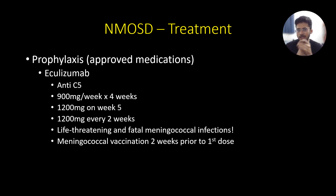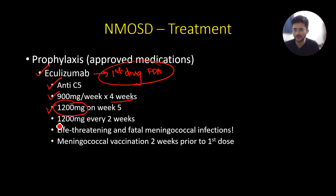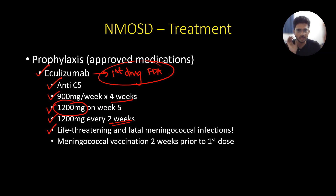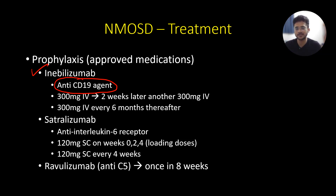There are 4 FDA-approved drugs for NMOSD prophylaxis. The first is eculizumab, an anti-C5 complement agent: 900 mg/week for 4 weeks, then 1200 mg on week 5, then 1200 mg every 2 weeks. A significant risk is life-threatening meningococcal infection — always vaccinate with meningococcal vaccine at least 2 weeks before the first dose. The second is inebilizumab, an anti-CD19 agent: 300 mg IV, then 300 mg 2 weeks later, then 300 mg IV every 6 months.